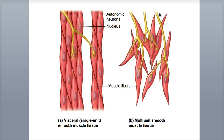This arrangement causes all of the fibers to work together as a single unit and contract or relax together. Multi-unit smooth muscle tissue is the other type of smooth muscle tissue, and is made of separate muscle fibers, with each connected to its own motor neuron terminals. In contrast to visceral smooth muscle fibers, there are no gap junctions. So when the action potential reaches the fiber, it triggers the contraction of only that one fiber, working independently of the other fibers nearby.